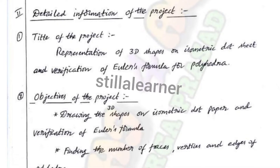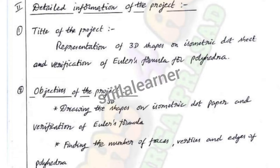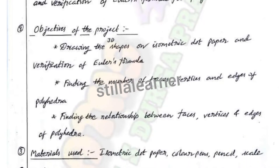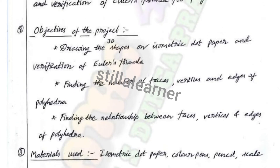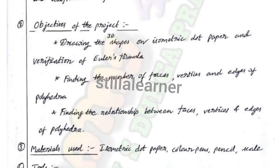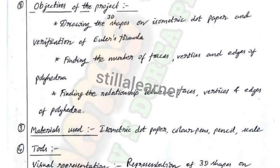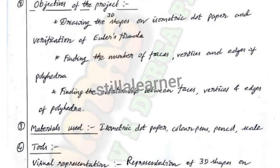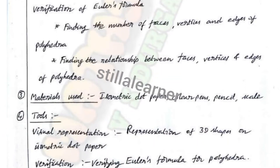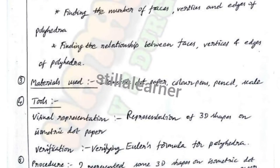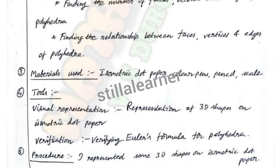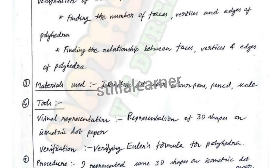The objectives of the project are: first, drawing 3D shapes on isometric dot paper and verification of Euler's formula; second, finding the number of faces, vertices, and edges of polyhedra; third, finding the relation between faces, vertices, and edges of polyhedra.